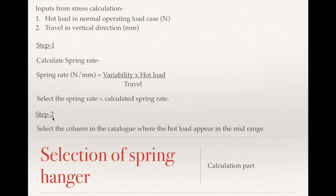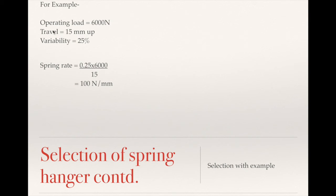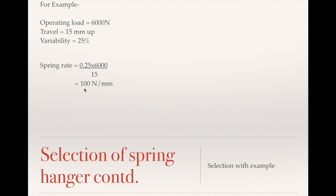Step 2 is to select the column in the catalog where the hot load appears in the mid-range. For example: operating load from stress calculation is 6 kN (6000 N), travel is 15 mm up, and variability is 25%. Calculating the spring rate: 0.25 × 6000 ÷ 15 = 100 N/mm. So the calculated spring rate is 100 N/mm.